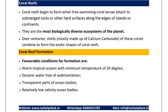Moving to the last topic: coral reefs. Corals are invertebrate animals and coral larvae attach to rocks, leading to the formation of coral reefs. These are underwater ecosystems formed due to a symbiotic relationship between coral reefs and zooxanthellae algae. Moving to the favorable conditions for formation: coral reefs occur in tropical oceans with a minimum temperature of 20 degrees. The oceanic water should be free of sedimentation — if there is sediment, it will choke the corals and lead to coral bleaching. There should also be low salinity.